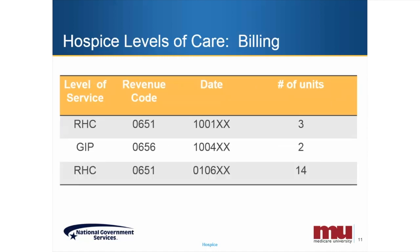Each level of care requires a service date. For Revenue Code 0651 (RHC), 0655 (Inpatient Respite), and 0656 (General Inpatient), hospices must report the earliest date that each level of care was provided at each service location. A new line item must be reported any time the location and/or the level of care changes. For example, if a patient started the month in RHC, then moved to a GIP level of care, and then returned to RHC all during a single month, we would report three separate line items to show RHC, general inpatient, and then another line to show the beneficiary returned to RHC.